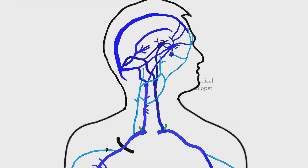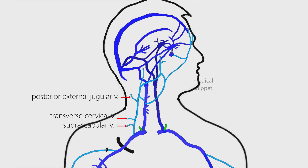The tributaries of the external jugular vein are: posterior external jugular vein, transverse cervical vein, suprascapular vein, and anterior jugular vein. The anterior jugular vein communicates with the opposite side via the jugular venous arch.